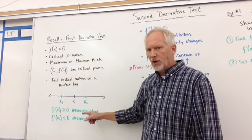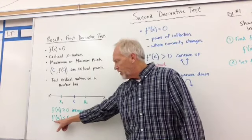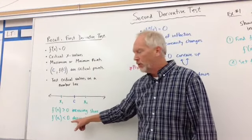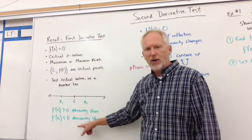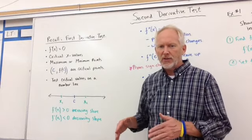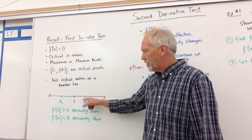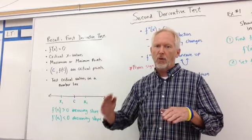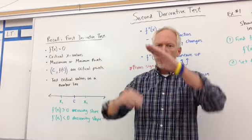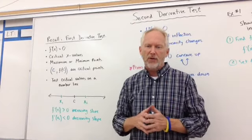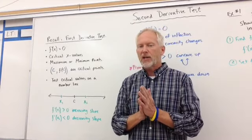And so what happens is if we see f prime of x sub 2 is less than 0, then we say that's decreasing. So we draw an arrow plus and minus, and that way we know that we're going up to the c value and then going down from the c value. And that would show that it's a maximum.